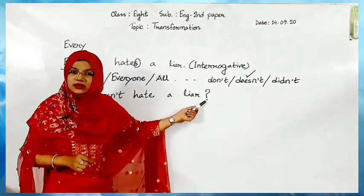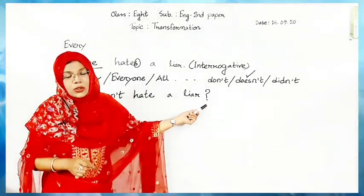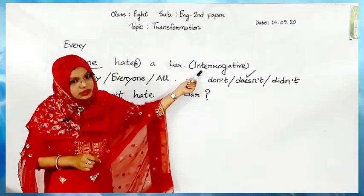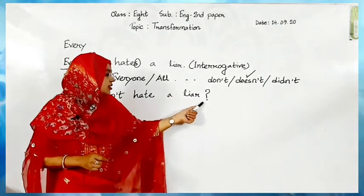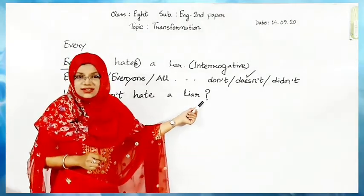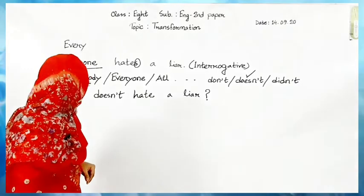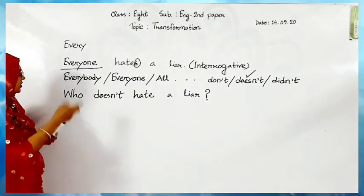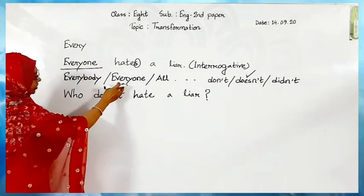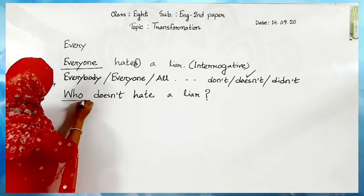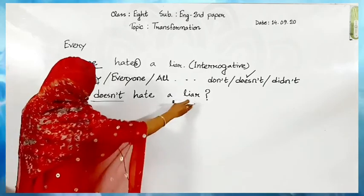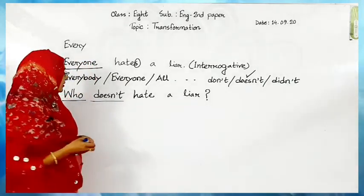Dear learners, the use of punctuation marks in transformation is very important. When we are making a sentence into interrogative, of course you will put a note of interrogation at the end of the sentence. So to indicate the changes: for 'everyone' or 'everybody' or 'all,' we take 'who'; for 's' with the verb, we take 'doesn't'; then 'hate a liar' — that's the answer.